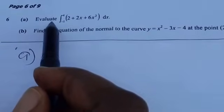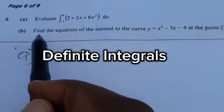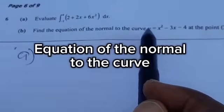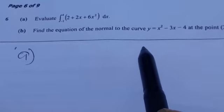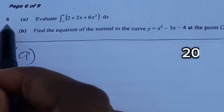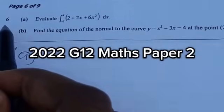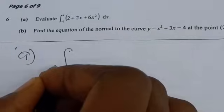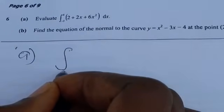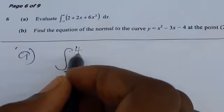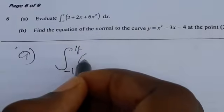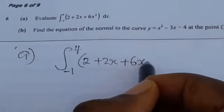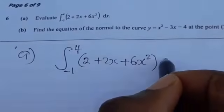In this video, we are going to look at how to evaluate definite integrals and also how to find the equation of the normal to the curve at a given point, using question 6 of the 2022 grade 12 mathematics. Part A says evaluate — they want us to evaluate the definite integral with limits from negative 1 to 4 of the function 2 plus 2x plus 6x squared dx.